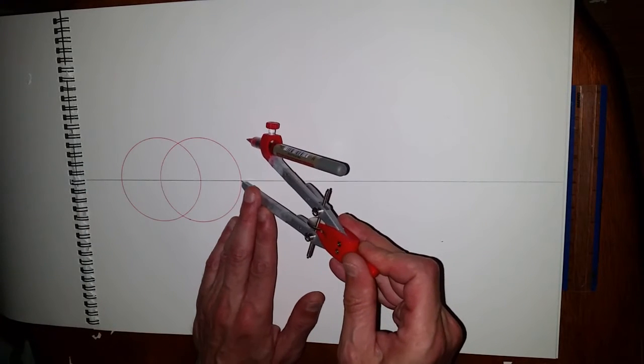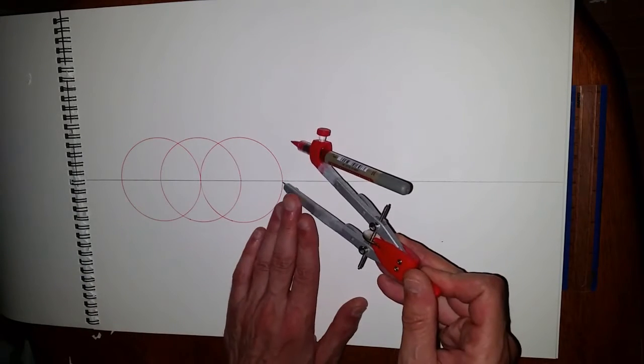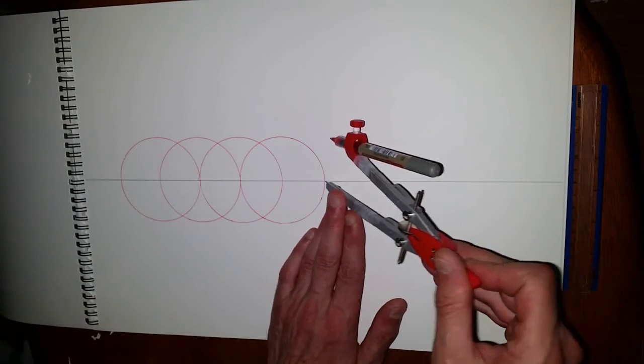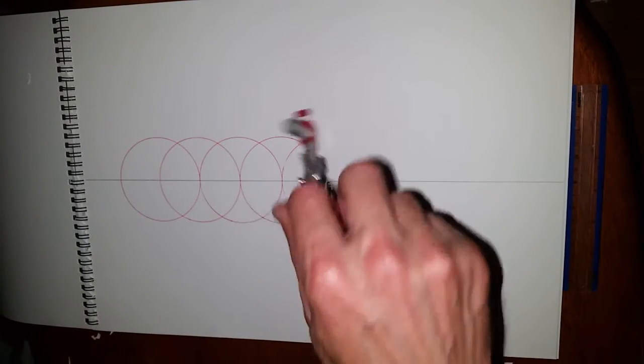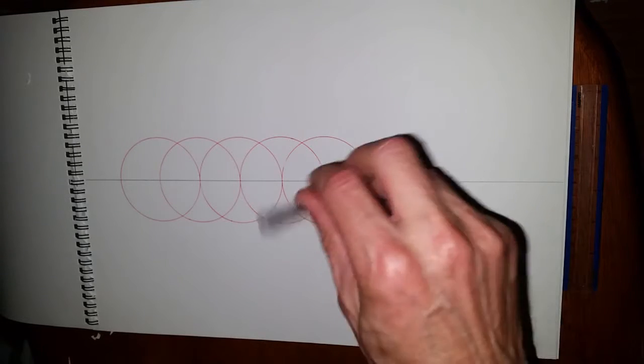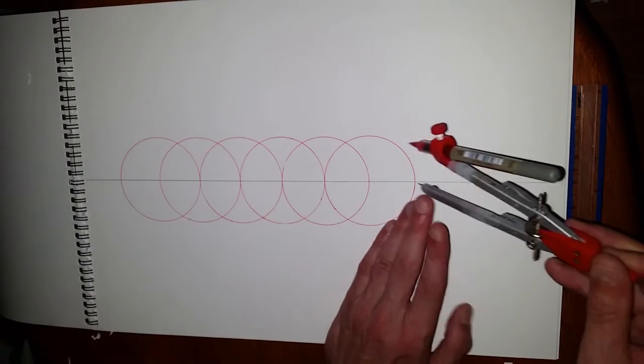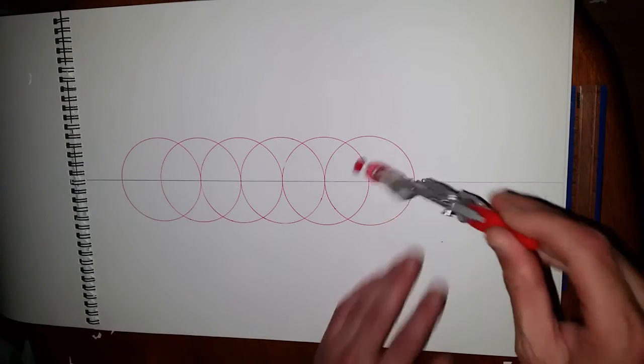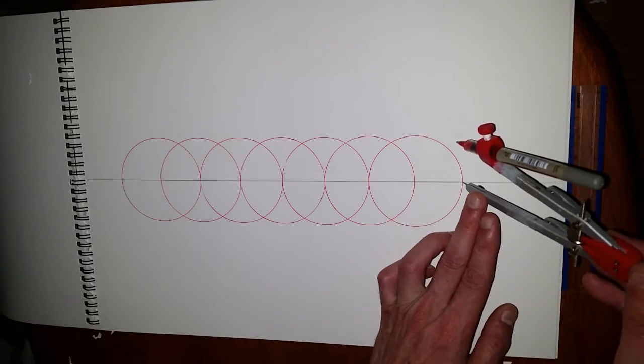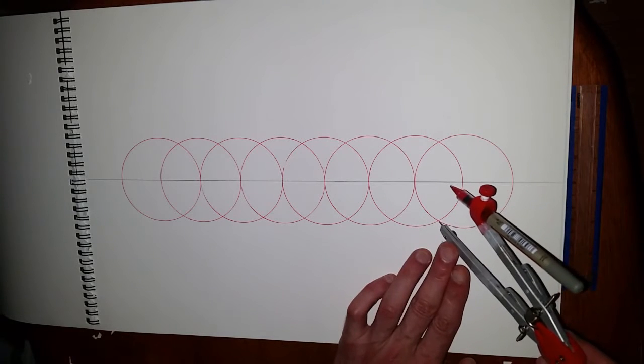I'm just going to extend that across, and we've done what's called a double vesica. Yep, I'm in camera. That should be enough, one, two, three, four, five. We'll just do a couple extras, have a little bit extra, it's not a problem.